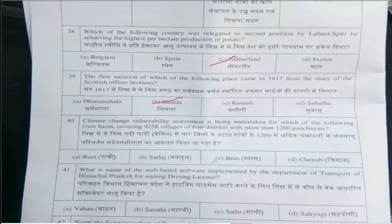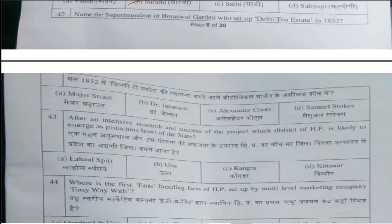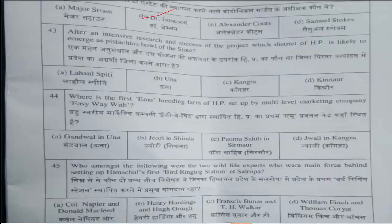Forty-first question: What is the name of the web-based software implemented by the Department of Transport of Himachal Pradesh for issuing driving licenses? The answer is option B, Sarthi. Forty-second question: Name the superintendent of Botanical Garden who set up Dalhousie Tea Estate in 1852. Answer is option B, Dr. Jameson. Forty-third question: After intensive research and success of the project, which district of HP is likely to emerge as the pistachio bowl of the state? Answer is option D, Kinnaur.